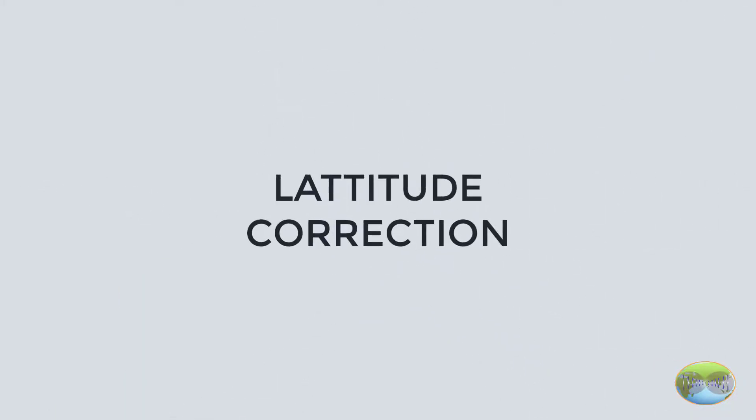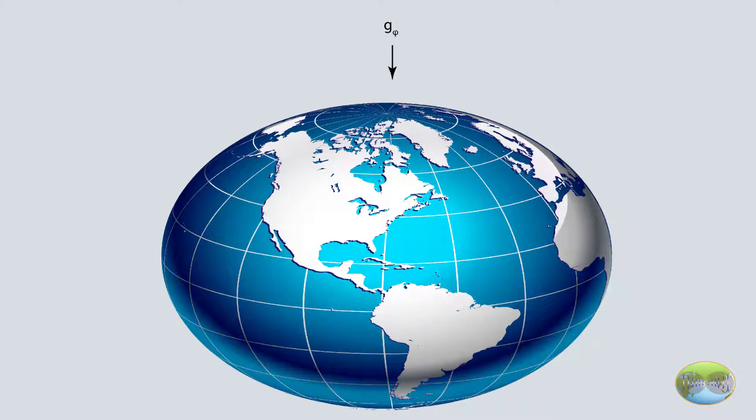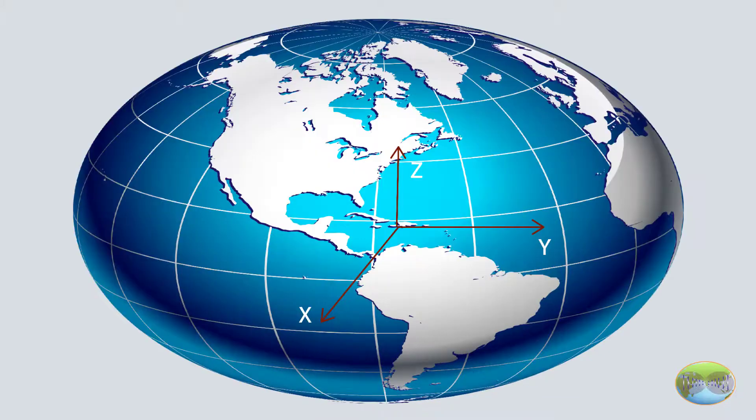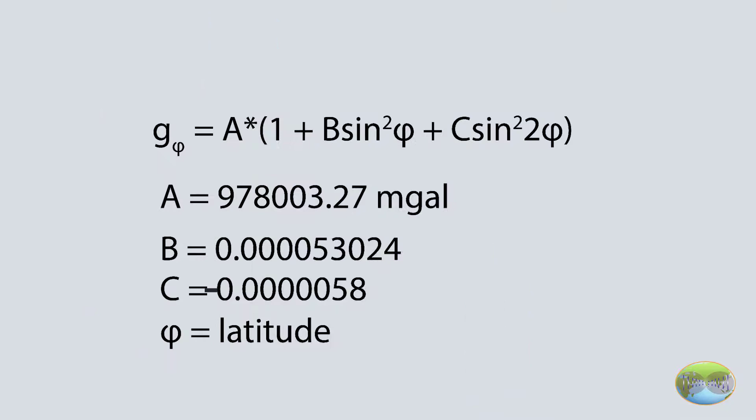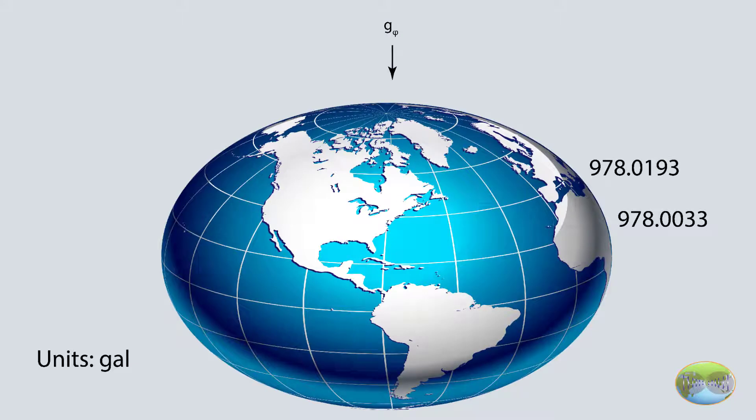The first one is normal or latitude correction. This essentially is removing the field due to homogeneous spheroid earth alone, about which I explained in the last video. It is done by using the international gravity formula, which depends solely on latitude and increases from equator towards the pole.